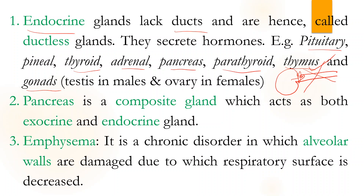There are other types of glands known as exocrine. A very important question: which gland acts both as exocrine and endocrine? That is the pancreas. We can call it a composite gland.